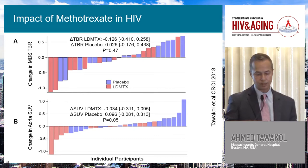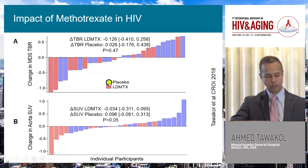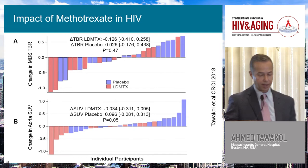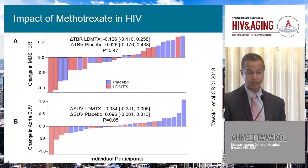In ACTG A5314, comparing placebo versus low-dose methotrexate, looking at histograms of individual patient responses — there's no difference. The primary endpoint, change in TBR, did not differ between the two groups. A secondary endpoint looking at change in SUV had a minuscule difference that barely reached significance. Summarizing: there doesn't really seem to be much of an effect at all — no harm, but no appreciable effect.